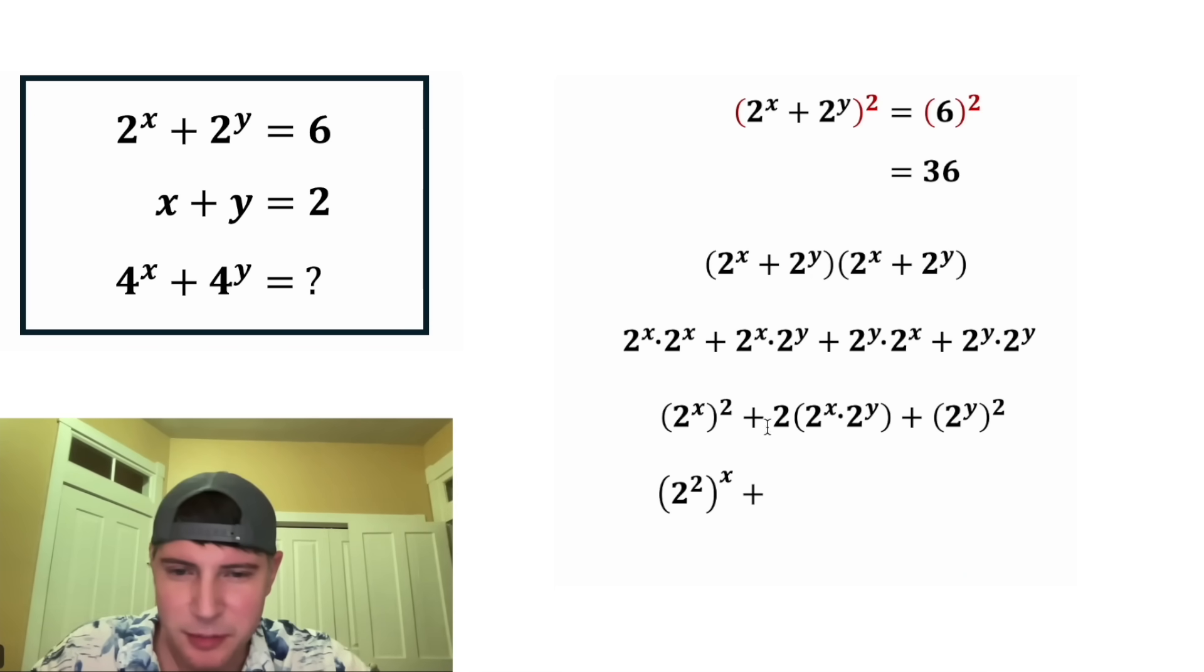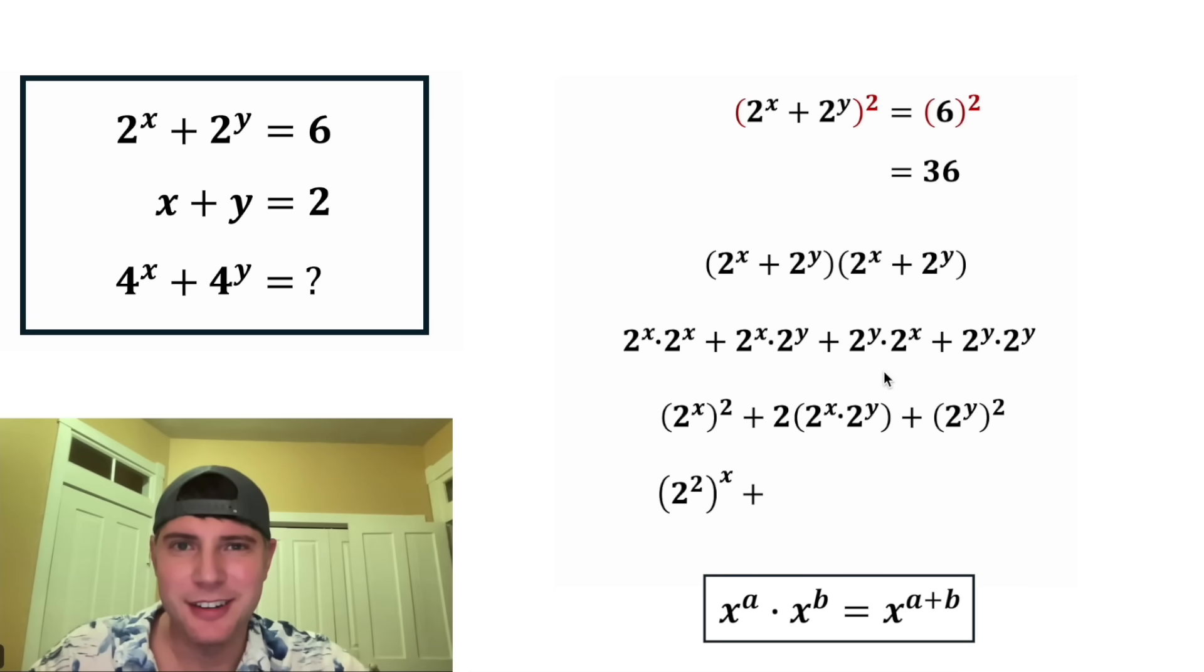And then now let's simplify this middle term. If you're multiplying two powers with the same base, you can just add the exponents. Here's the notes right here. So this 2 to the x times 2 to the y would become 2 to the x plus y. We're just adding the exponents.